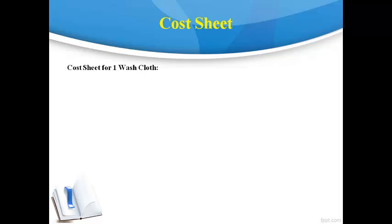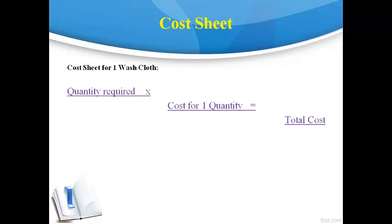Let's take a look at how an accountant would determine the cost to make one washcloth. A cost sheet has three columns. The first column is the quantity required. This is multiplied by the second column, the cost for one quantity, which gives you the third column of the total cost. Total cost equals the quantity required multiplied by the cost for one quantity.